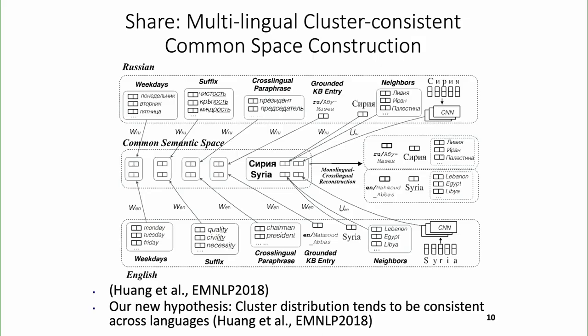However, this kind of framework needs a lot of bilingual dictionaries and parallel data. One effort we tried to reduce the cost is to construct a cluster-consistent common space. The multilingual word embedding assumes that two words like orange and apple, if they are close to each other in English, should also be close in Chinese or Arabic. We extend that hypothesis to cluster-consistency: if you have a professor cluster and a student cluster that are close in English, you can reasonably assume they're also close in other languages.